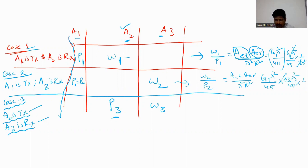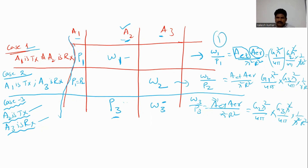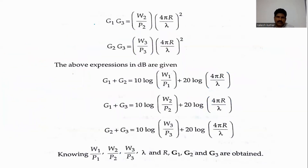Similarly, for Case 3, W3 / P3 = (Ae_t × Ae_r) / (λ² × r²). Here A2 is the transmitting antenna, so we write g2 × λ² / (4π), and A3 is the receiving antenna, so we write g3 × λ² / (4π). The λ² terms cancel. This gives expression 1, expression 2, and expression 3.